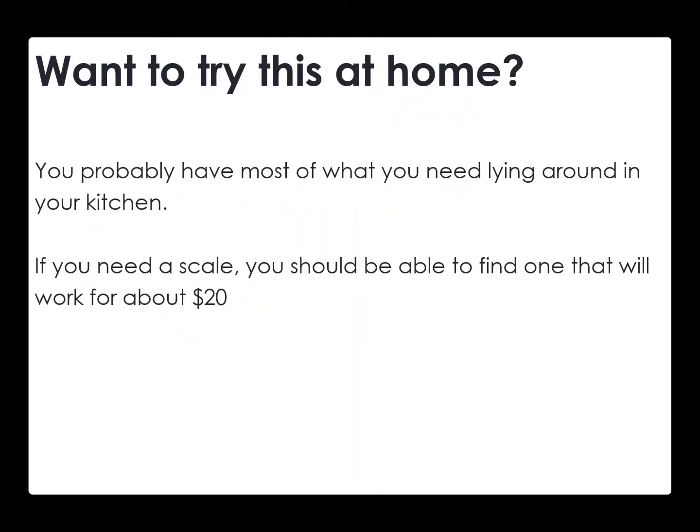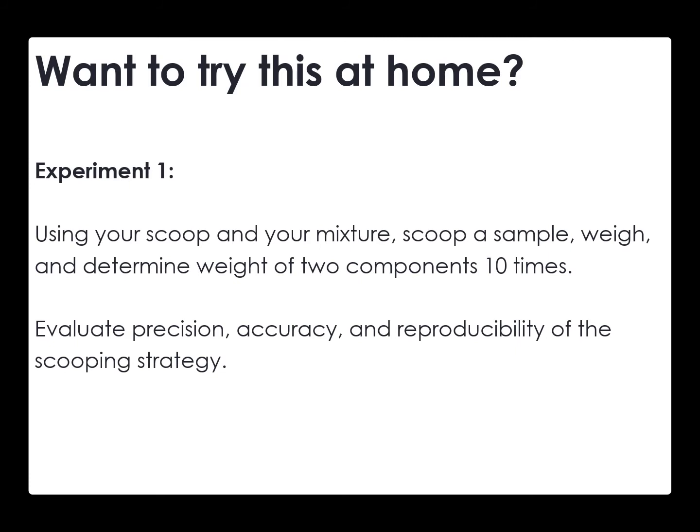If you want to explore this further on your own at home, you probably have everything you need in your kitchen already. If you don't have a kitchen scale, you can get a pretty good inexpensive digital scale nowadays — just make sure it has a capacity of over one kilo. Things you can do at home include testing the reproducibility of a given sampling scoop for single-sized samples or for multiple samples bulked together, similar to taking one scoop versus multiple scoops with the golden spoon. You can evaluate this both in terms of the observed percentage of particle A versus particle B and in terms of the total mass sampled.